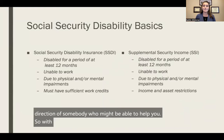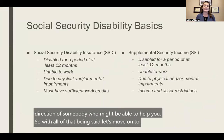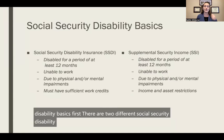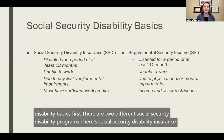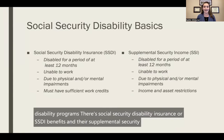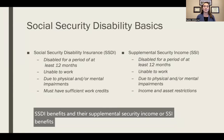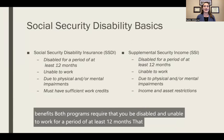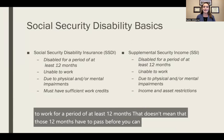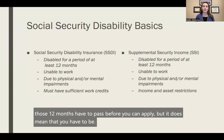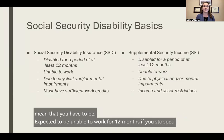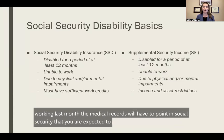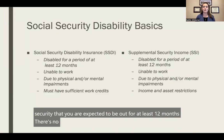Let's move on to Social Security Disability basics. There are two different Social Security Disability programs: Social Security Disability Insurance, or SSDI benefits, and Supplemental Security Income, or SSI benefits. Both programs require that you be disabled and unable to work for a period of at least 12 months. That doesn't mean those 12 months have to pass before you can apply, but you have to be expected to be unable to work for 12 months. There are no really temporary Social Security Disability benefits.